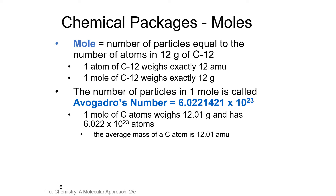You might ask why the periodic table lists the mass of carbon as 12.01 grams when we just said we defined it to be 12 grams. That's because carbon does not only exist as carbon-12 — we also have carbon-13 and carbon-14. If we average all of those masses, we come up with 12.01, which shows that carbon-12 is by far the most abundant isotope.